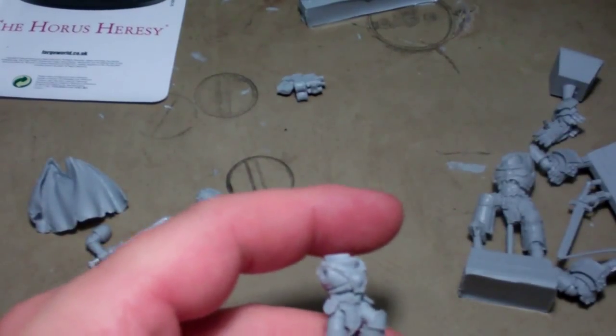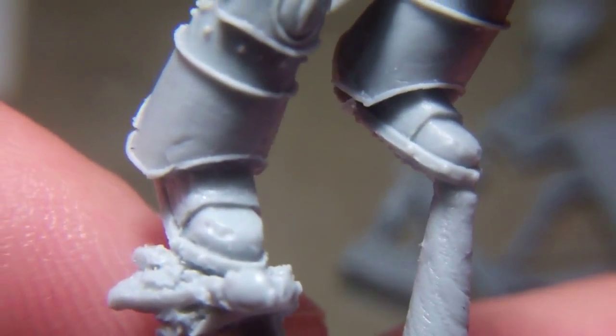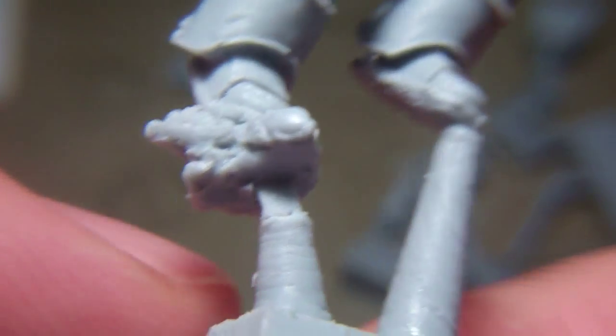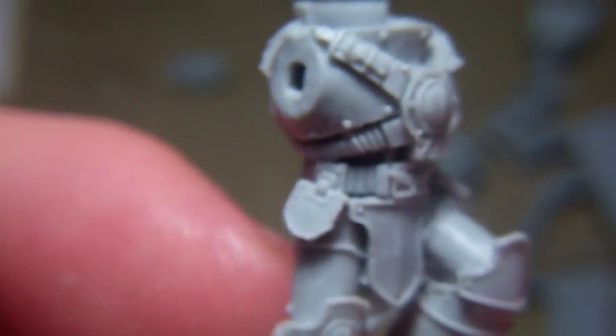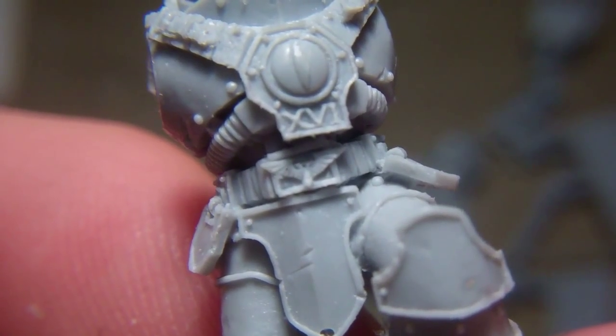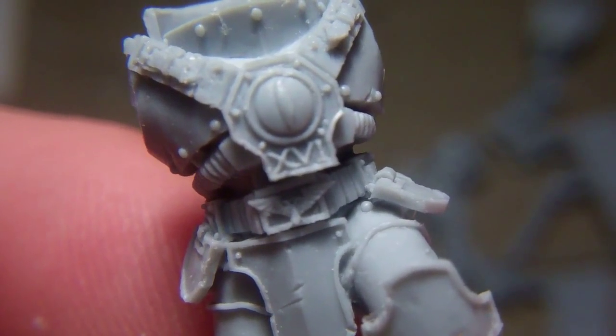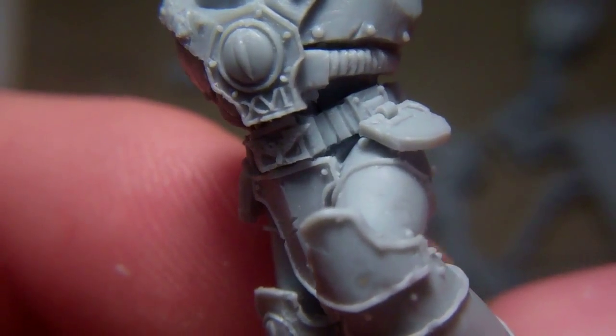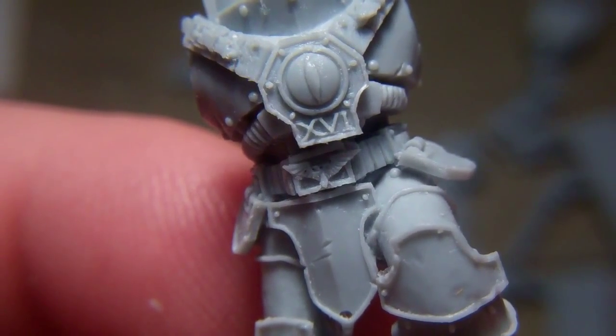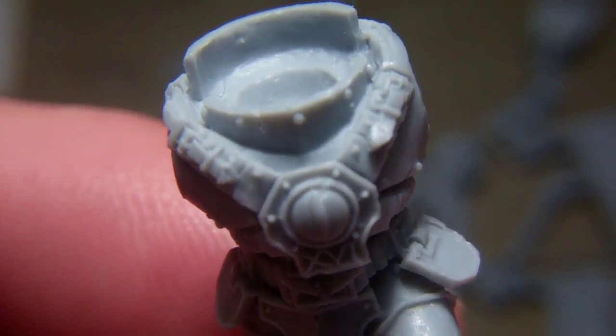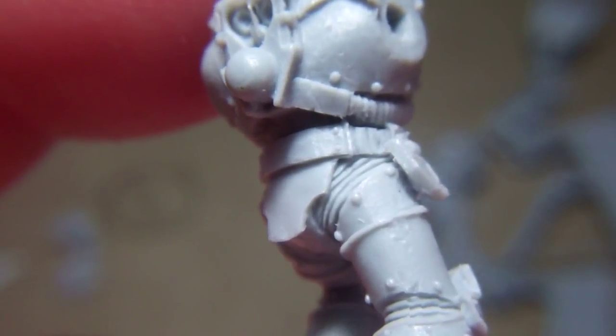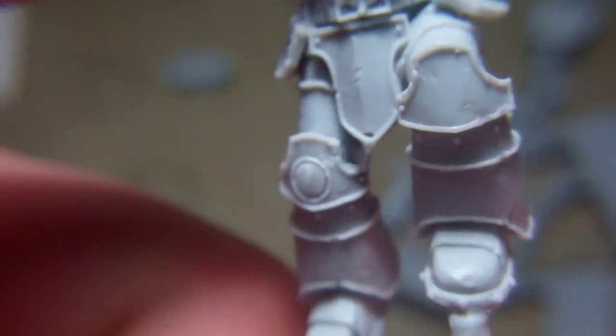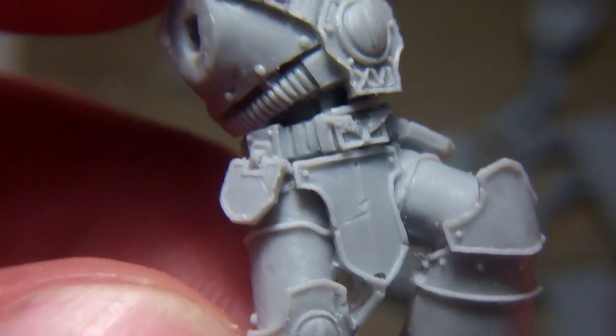We'll look at Loken first. You can see he's kind of in a forward stride. You can see the piece that's going to fit into the base, where that little squared off part is going to fit in to the scenic base. You can see he's got the detail. He's got the eye of Horus still emblazoned on his chest. The legion marking, 16. I don't remember if that's the legion number for Sons of Horus or if that's the company he leads.